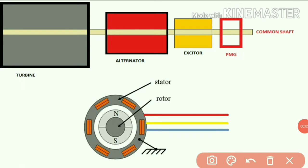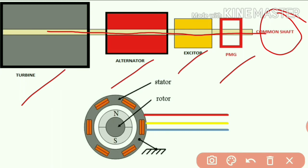So here in this, turbine, alternator, exciter, and permanent magnet generator, all four devices are connected through this common shaft. So what that means is, if the common shaft rotates anyhow, all the four devices rotate.